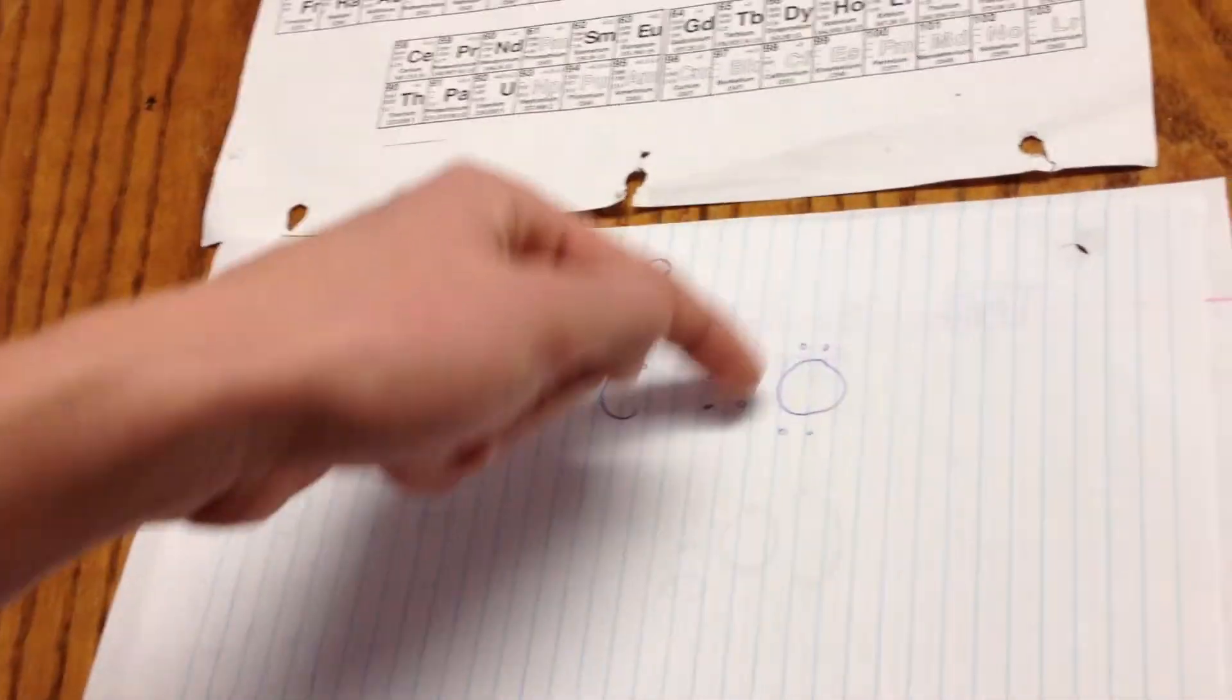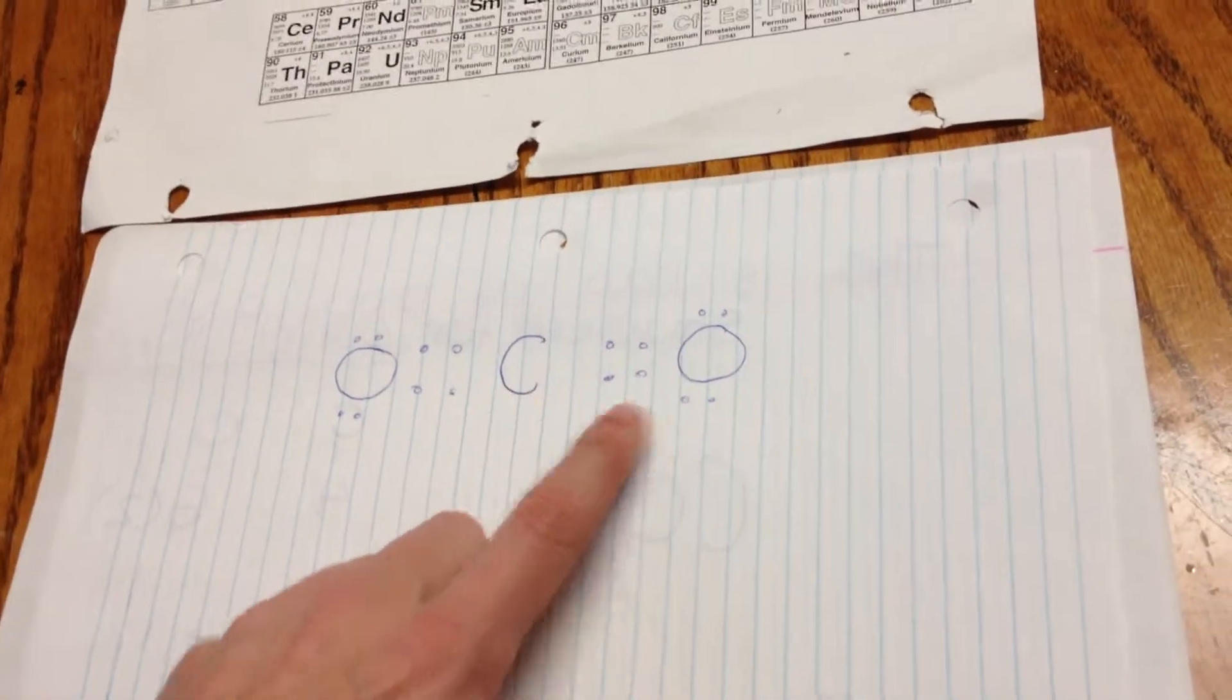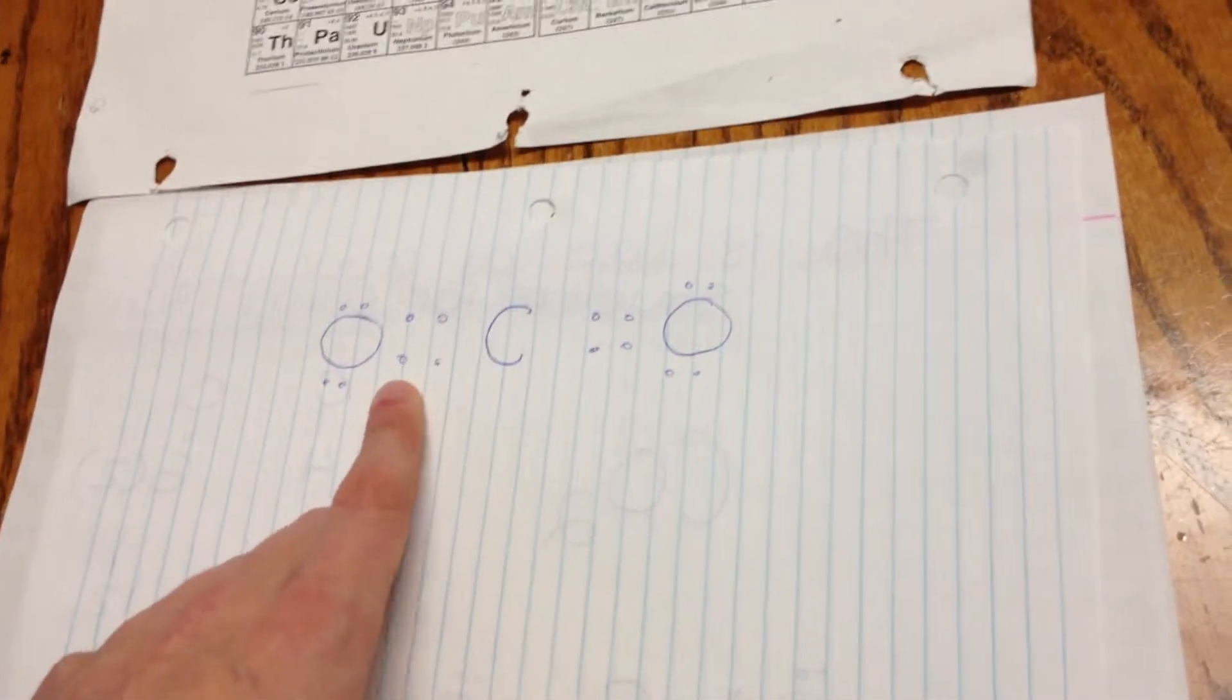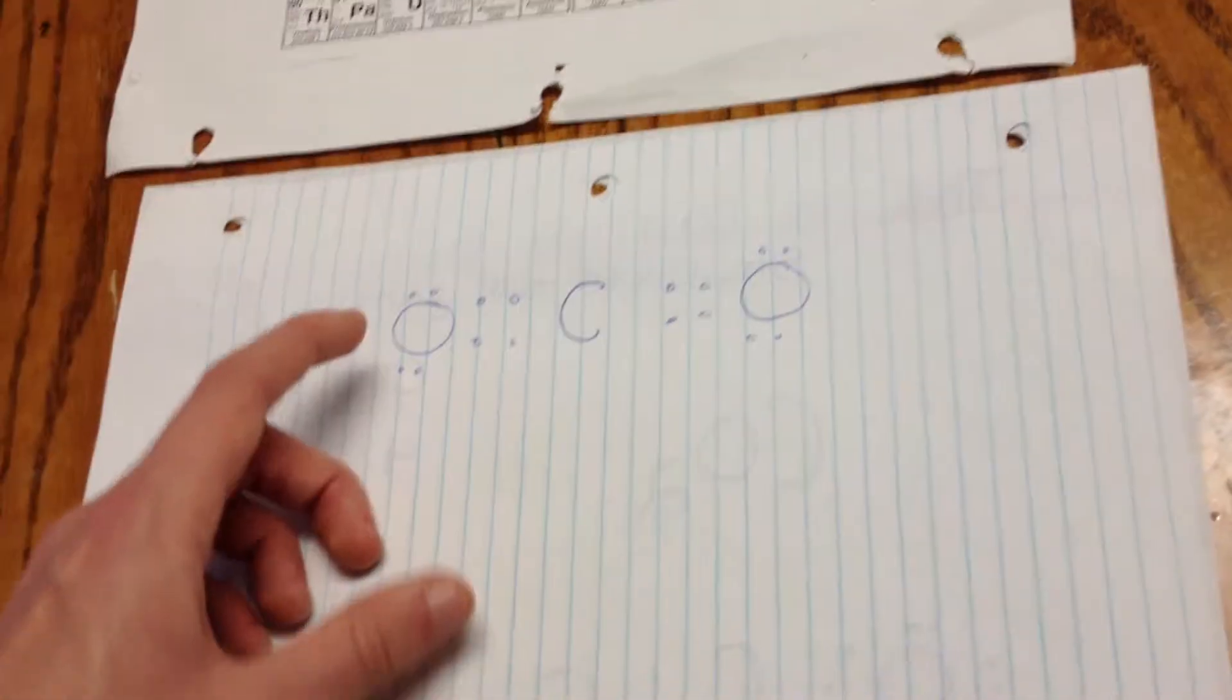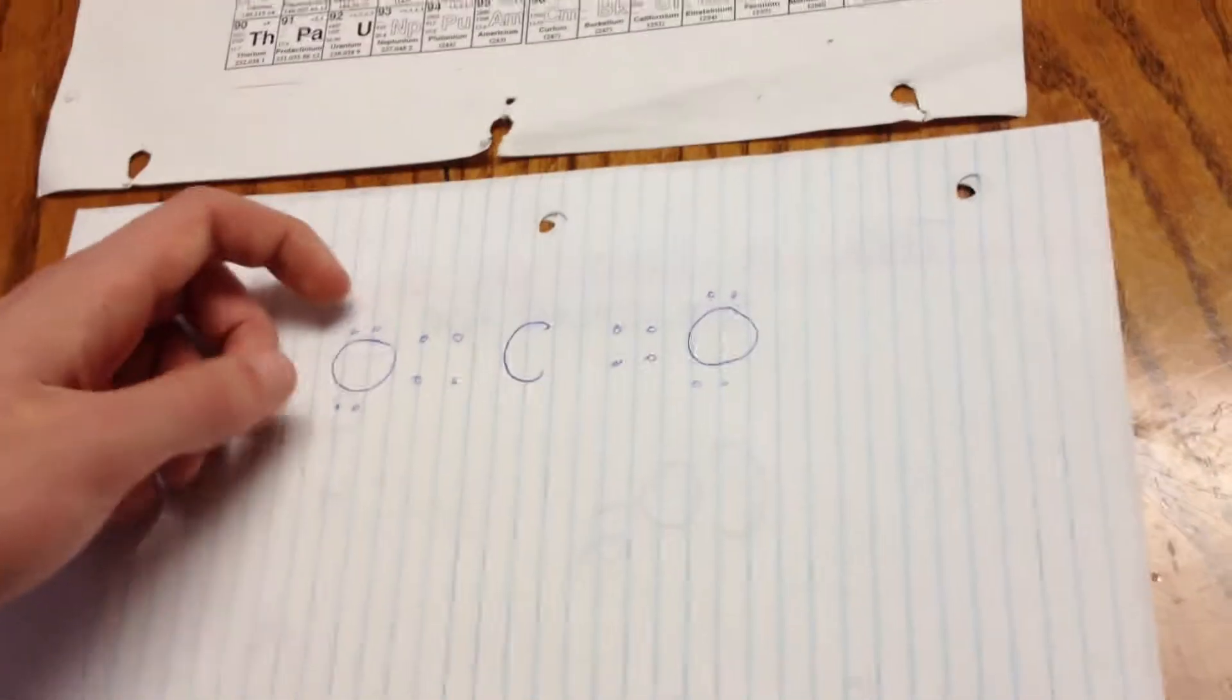So now it would look like this. Now oxygen has two, four, six, eight valence electrons and it follows the octet rule. Carbon has two, four, six, eight valence electrons, it follows the octet rule. And the second oxygen also follows the octet rule because it has two, four, six, eight valence electrons.